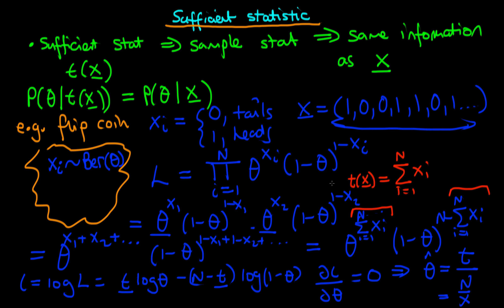So, in summary, a sufficient statistic is a function of your sample, some sample statistic in other words, that conveys exactly as much information about the data generating process, in this case our parameter theta, as does the entire sample.